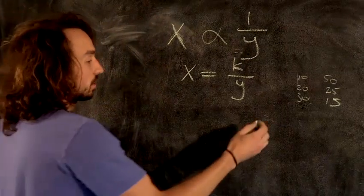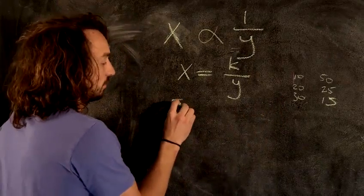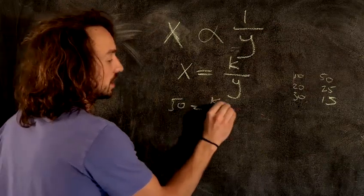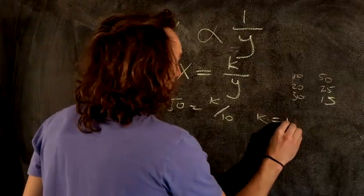I might come out with, I put in let's say 50 here for the number of jackets I sell, equals K over my temperature. I find my K is 500.